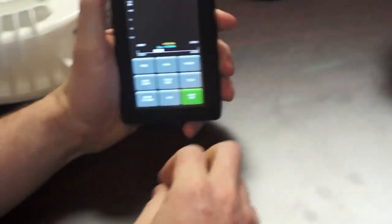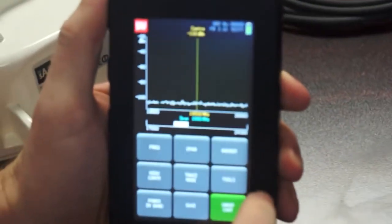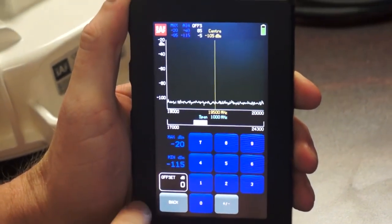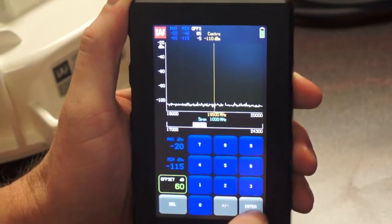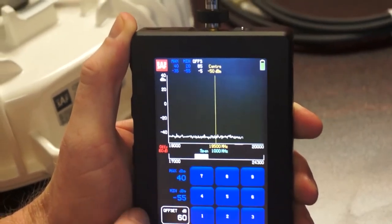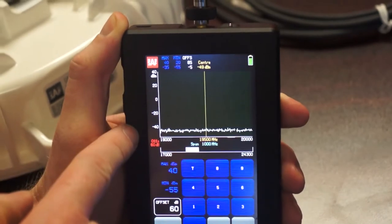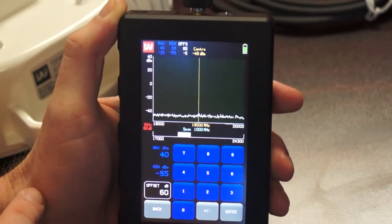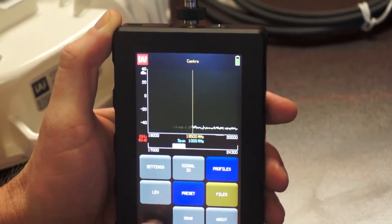All right, so we'll go ahead and turn on the Spectrum Compact. Now the first thing I'm going to do is set the offset for the attenuators. When I put in the 60 dB of offset into the Spectrum Compact, it adjusts the vertical axis to account for the fact there's 60 dB of attenuation in the signal or the cable.